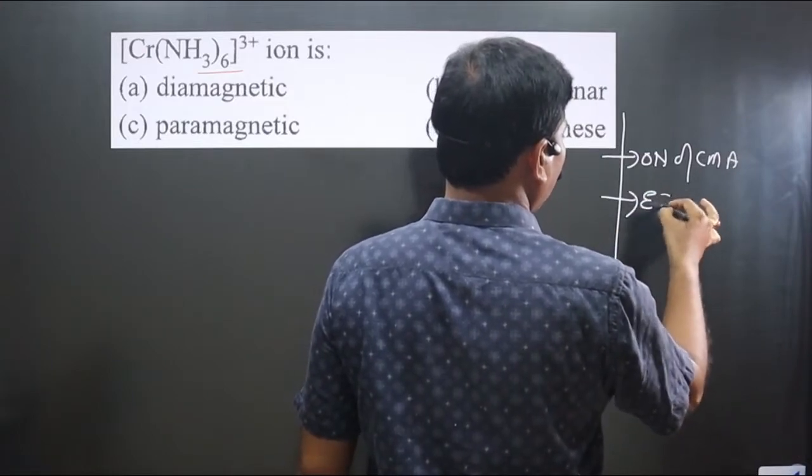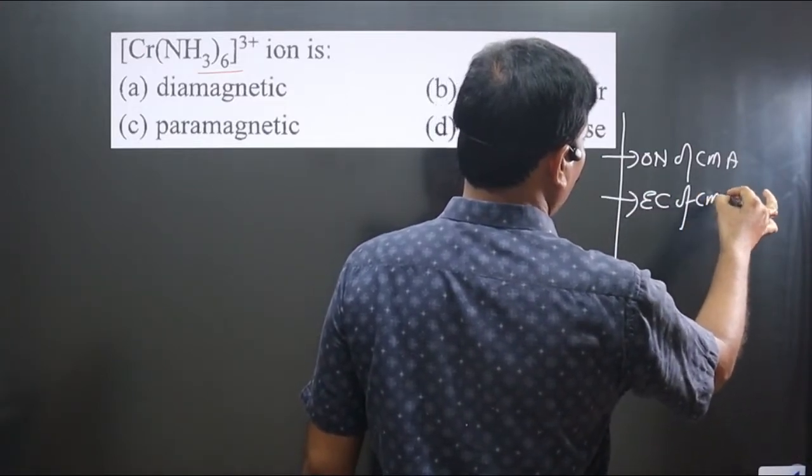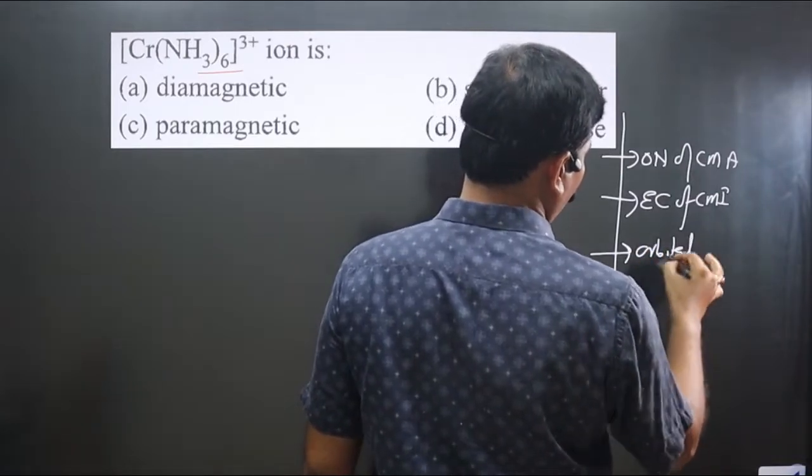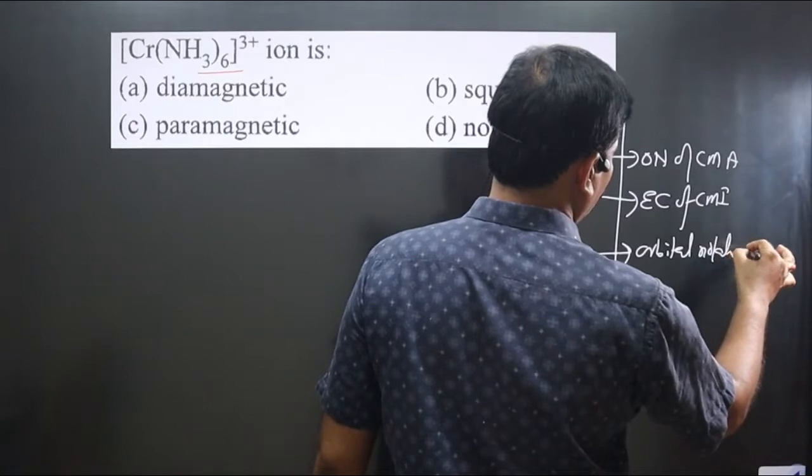Then you write electronic configuration of the central metal ion, followed by orbital notation for the central metal ion.